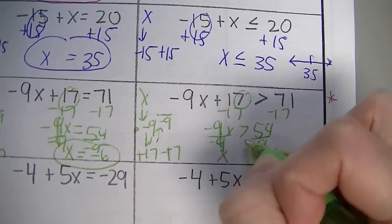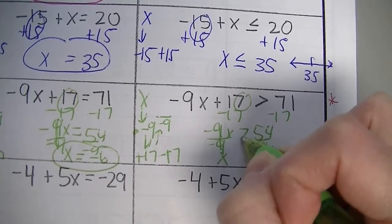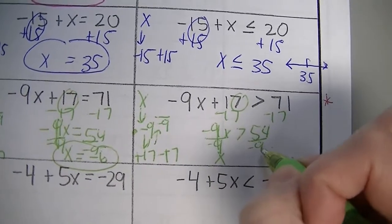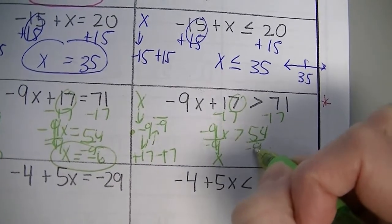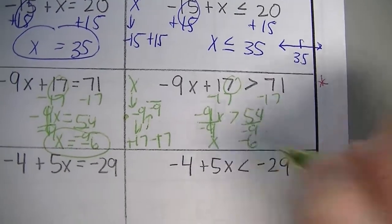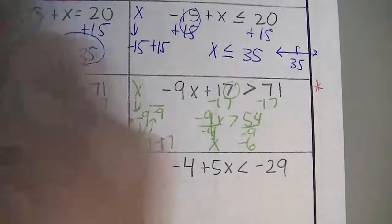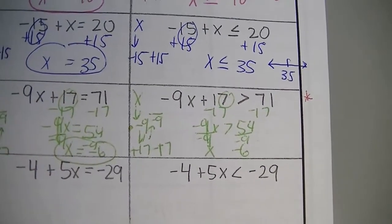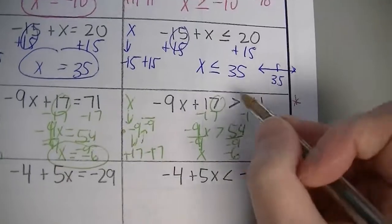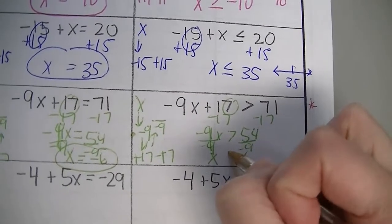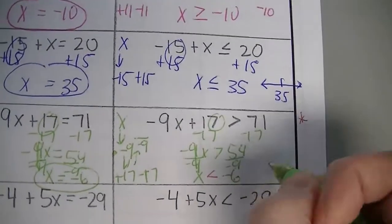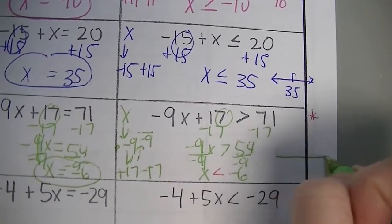So notice right here — I just divided by a negative number, so it's the end, and we need to flip that inequality sign. The x was there, the inequality sign went one way, but we have to reverse it because we divided by a negative. So we're going to flip it the other way. Keep that in mind when you go ahead and graph it.